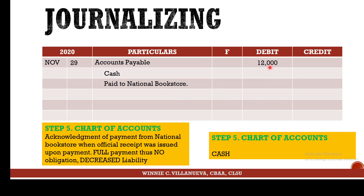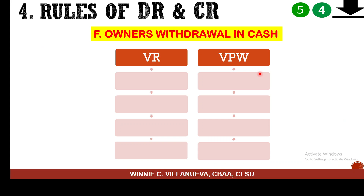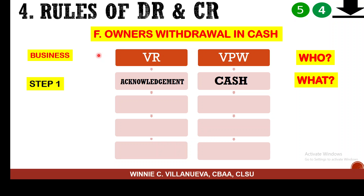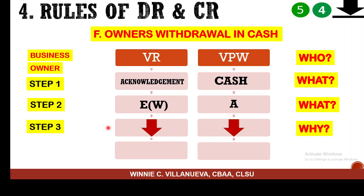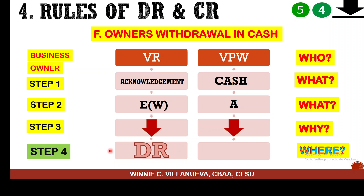The sixth sample: the owner withdraws. When the owner withdraws, it's also an acknowledgement, and cash goes out of the business. Equity decreases due to the withdrawal, and the asset decreases. It's still just debit and credit. What changes is only the effect — increase or decrease — but the placement is always left-right, left-right. Your left and right hands don't change position.